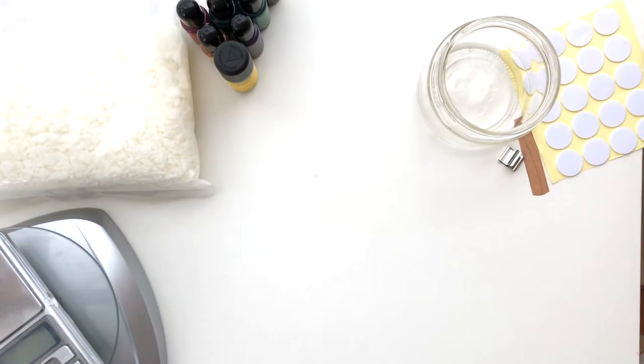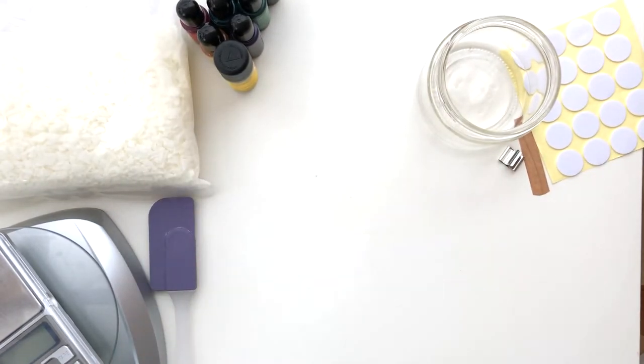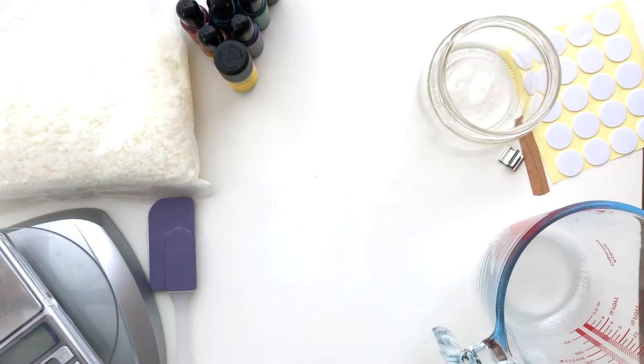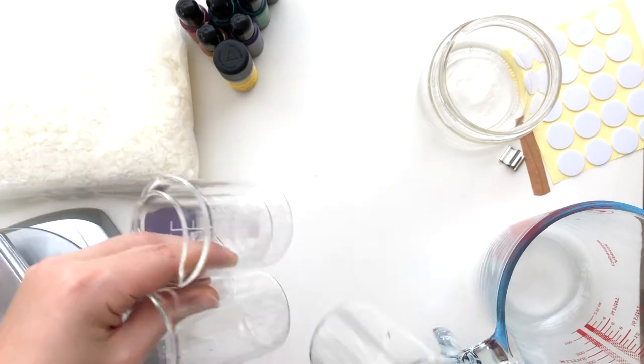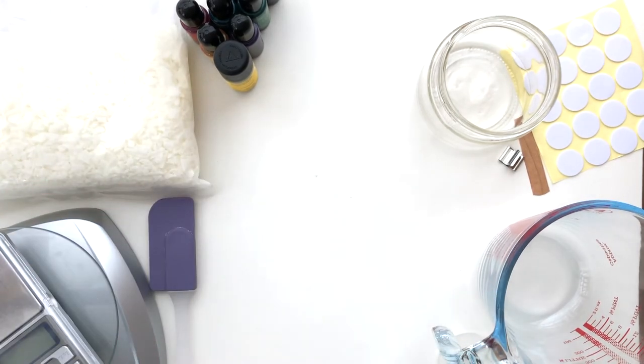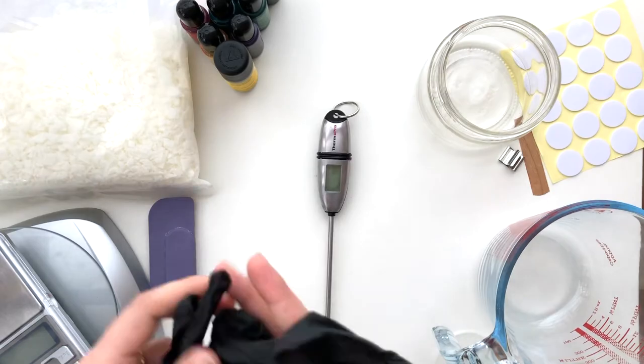Then, digital scale, a spatula, a container large enough to weigh the wax and 7 smaller ones to prepare the layers, a thermometer and gloves.